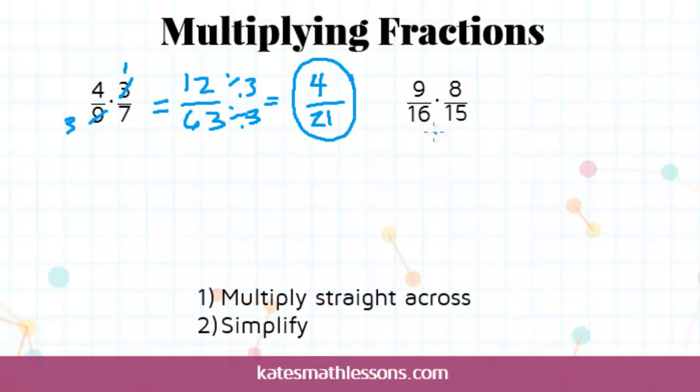So let's look at this one. We'll try it both ways. If I multiply first, I go straight across. 9 times 8 is 72. 16 times 15 is 240. Now this fraction is not simplified. So if I'm going to simplify it, I'm looking for factors that they have in common. What numbers can I divide into both 72 and 240?